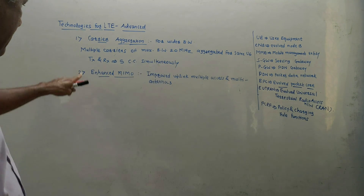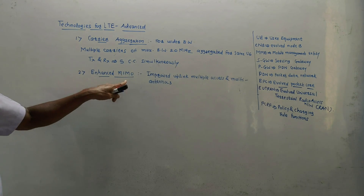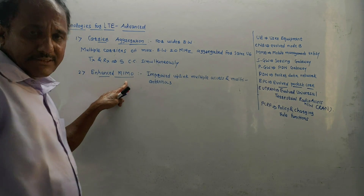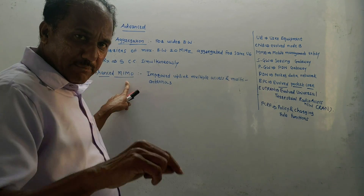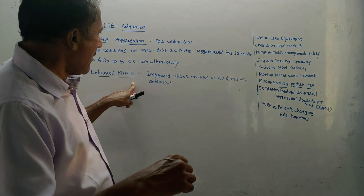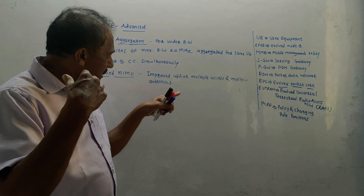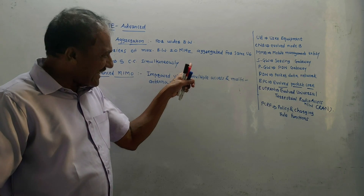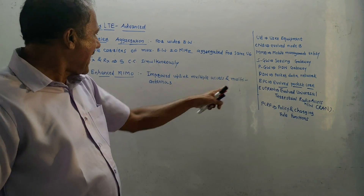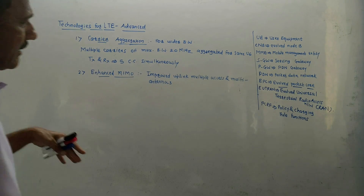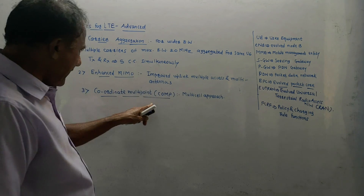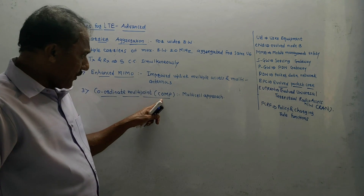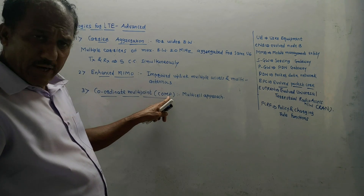The second technology is enhanced MIMO. MIMO stands for multiple input multiple output. It gives improved uplink as well as downlink multiple access and makes use of multiple antennas.